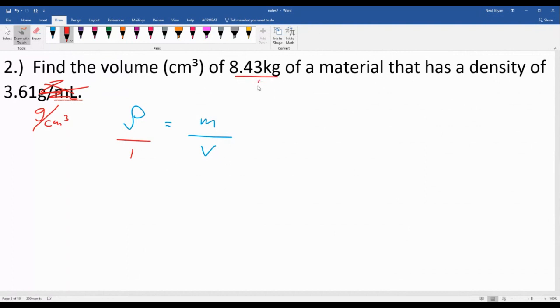And then here we want to remember that kilo or K means thousand, so one kilogram is a thousand regular grams. And that's going to be 8430 grams.